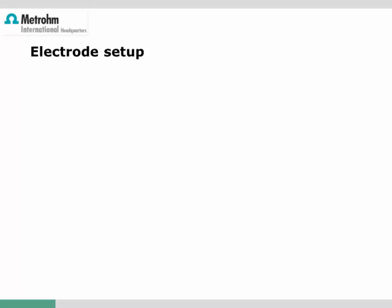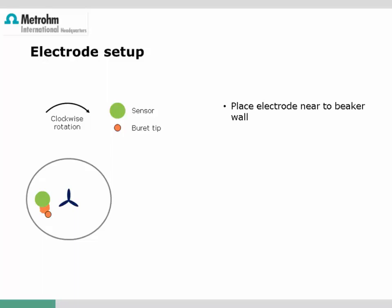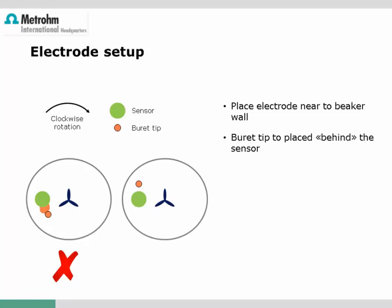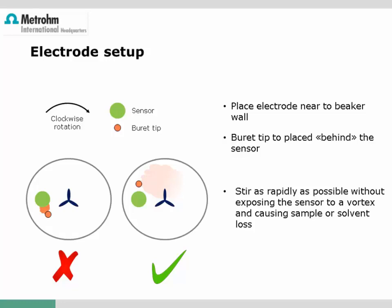However, the choice of burette, sensor, and stirrer itself is not sufficient to guarantee a successful titration. The arrangement of the stirrer, sensor, and burette tip are very important, and this is very often underestimated. We clearly recommend documenting the electrode setup in an application document, either by a detailed description, a picture, or a technical drawing. The burette tip should not deliver titrant directly to the sensor, as the sensor may indicate a too-high titrant concentration before it has distributed and reacted with the analyte. It is much better to place the burette tip behind the sensor.